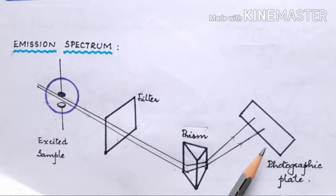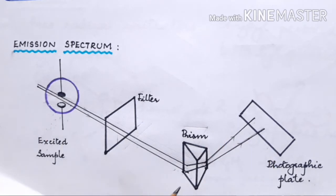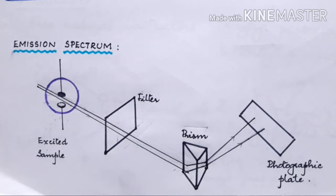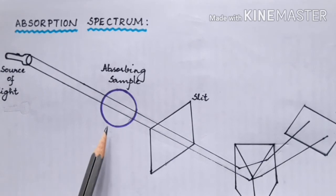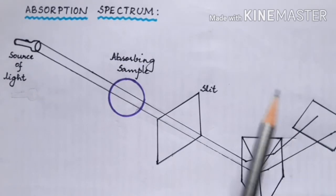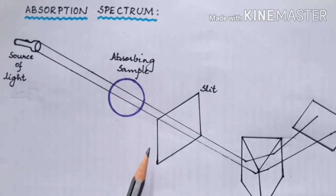The radiations from the excited sample are directed onto the prism, and the emergent radiations are recorded on a photographic plate. This type of spectrum obtained is known as emission spectrum. Emission spectrum consists of bright colored lines separated by dark space. On the other hand, we have the second type which is known as absorption spectrum.